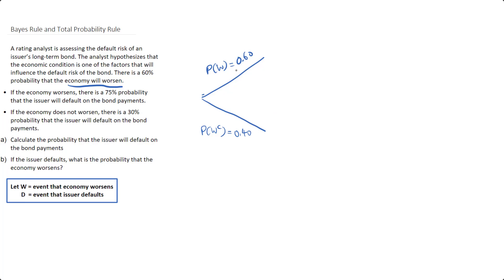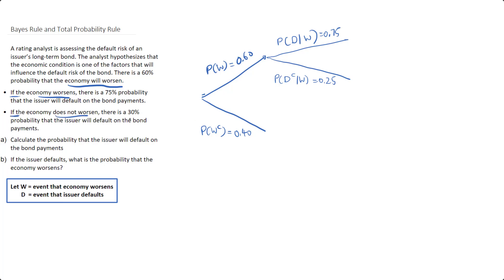Take note that the total probability of events has to sum up to 1. Then, given that the economy worsens, there is a 75% — so the probability of default given economy worsens is 0.75, and a 25% or 0.25 probability that the issuer will not default given the economy worsens. If the economy does not worsen, there is a 30% probability of default (0.3) and a 70% chance, or 0.7 probability, of no default given economy does not worsen.